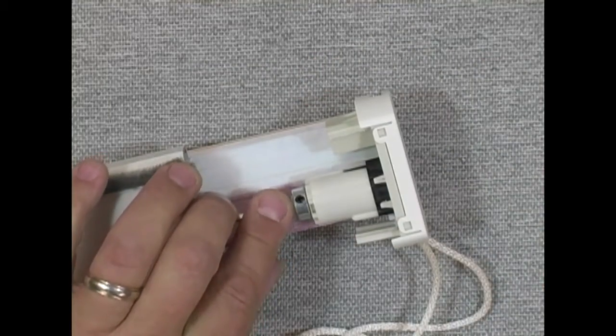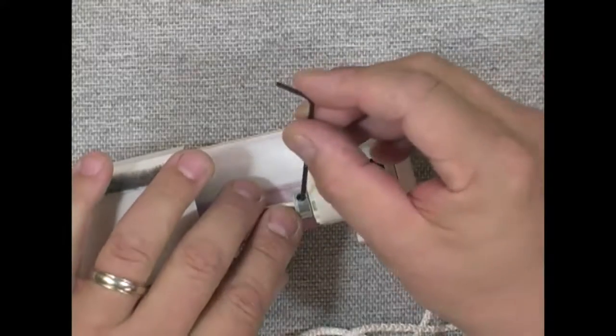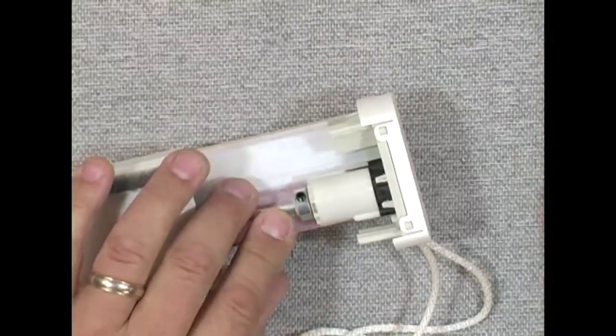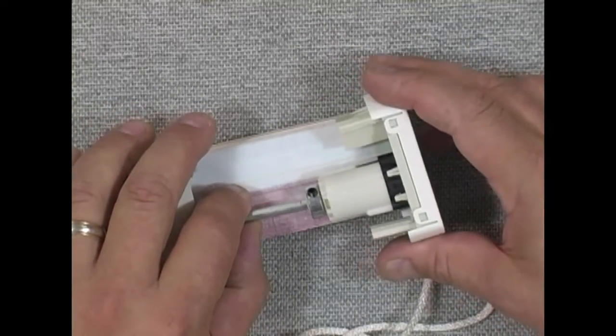It's held with this 5/64 inch allen screw here, so I'm going to take my allen wrench and undo the screw here, and go ahead and remove my Easy Rise clutch.